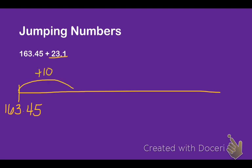10 whole numbers. Well, what's 163.45 plus 10? It's 173.45. Think about if you're adding $10. If you have $163.45 and somebody gives you $10, how much do you have? Well, you have $173.45.